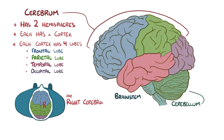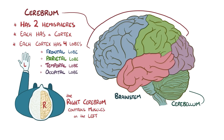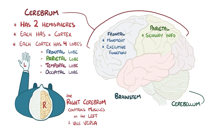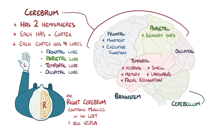The right cerebrum controls muscles on the left side of your body and vice versa. The frontal lobe controls movement and executive function, which is our ability to make decisions. The parietal lobe processes sensory information, which lets us locate exactly where we are physically and guides movement in three-dimensional space. The temporal lobe plays a role in hearing, smell, memory, as well as visual recognition of faces and language. Finally, there is the occipital lobe, which is primarily responsible for vision.